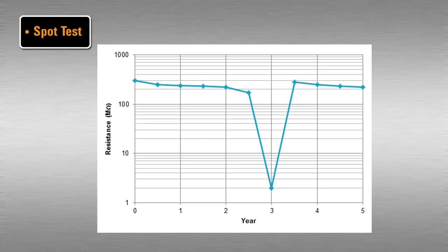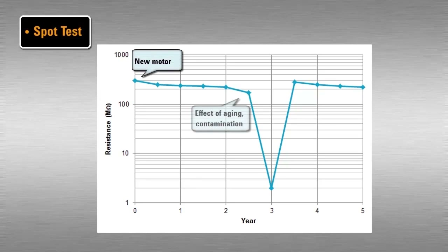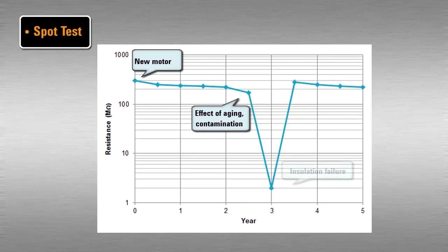This test is performed at regular intervals, for example every 6 months, to track changes in the resistance value over time. A slow decrease in the trend line may indicate that insulation is aging or contamination has happened. If there is a sharp drop in value, there may be an insulation fault.